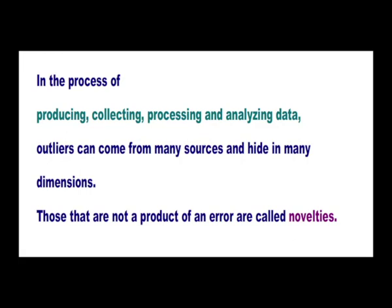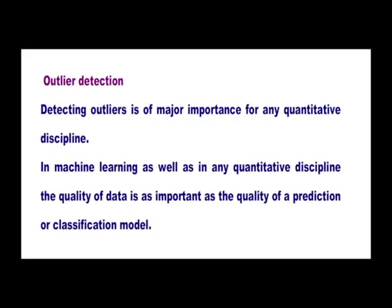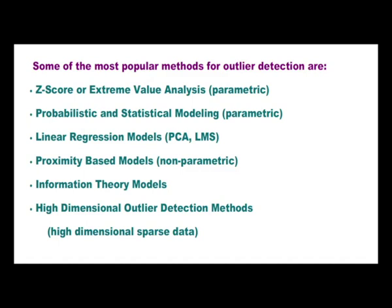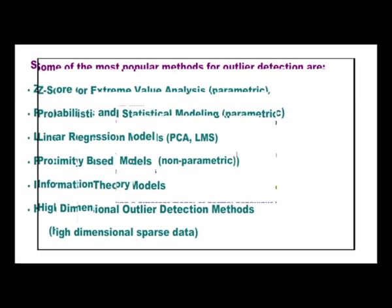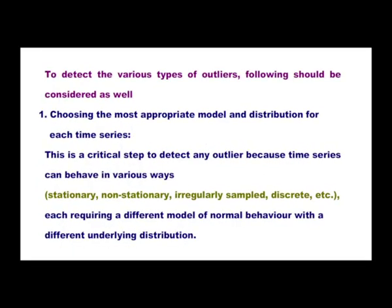In the process of producing, collecting, processing, and analyzing data, outliers can come from many sources and hide in many dimensions. Those that are not a product of an error are called novelties. Now we will see outlier deduction methods. Deducting outliers is of major importance for any quantitative discipline. In machine learning as well as in any quantitative discipline, the quality of data is as important as the quality of the prediction or classification method itself. Some of the most popular methods are z-score or extreme value analysis, probability and statistical modeling, linear regression models, proximity-based methods, information theory models, and high-dimensional outlier deduction methods for high-dimensional sparse data.